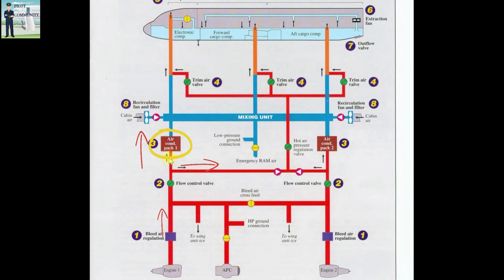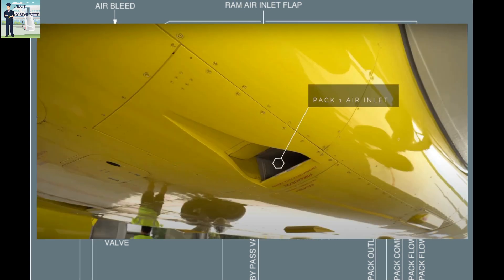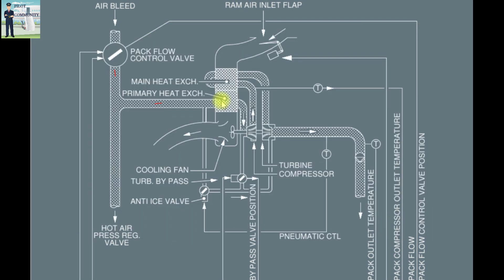Let us see the working of the air conditioning pack in detail. The hot bleed air enters the pack flow control valve, which is electronically controlled and pneumatically operated. The air then enters the primary heat exchanger — like a radiator of your car — which does initial cooling by taking air from outside the aircraft via the ram air inlet flap. After initially getting cooled, it enters the compressor section of the air cycle machine, where temperature and pressure are both increased. After the compressor, the air goes through the main heat exchanger, which brings the temperature down slightly.